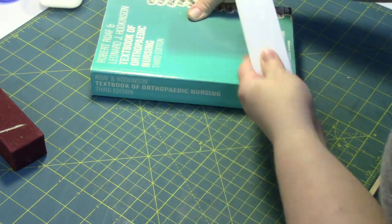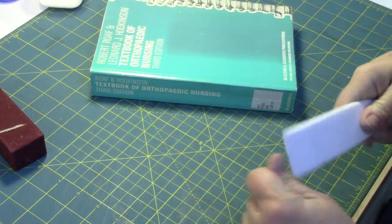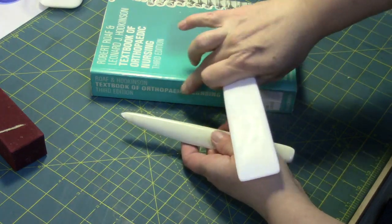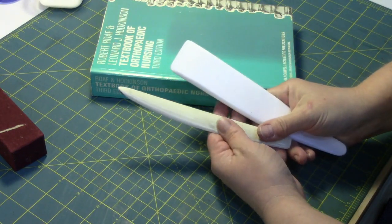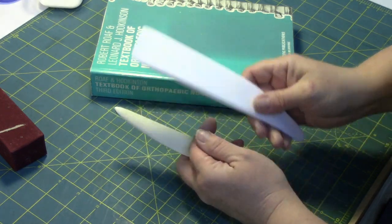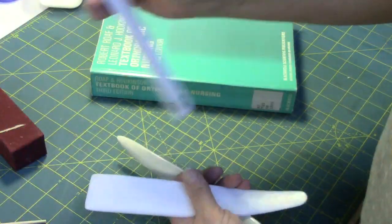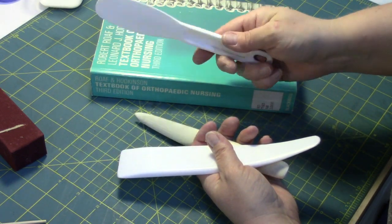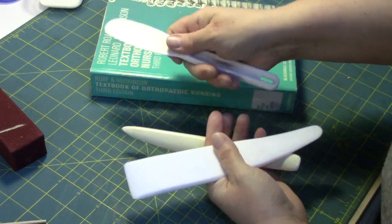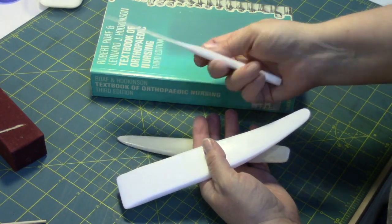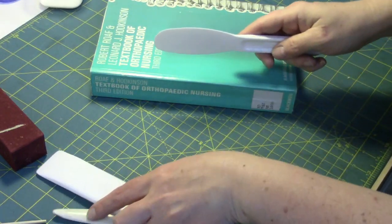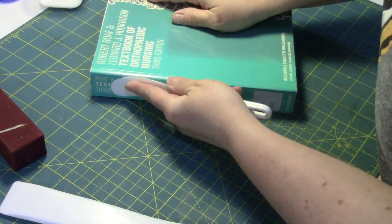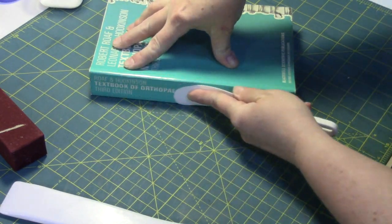You can even use a Teflon folder or a bone folder, there are different kinds of tools that are great to kind of burnish different surfaces in book binding. Some are actually made from bone, some are made from Teflon. You can also even use this, you've probably seen one of these, it's like an icing spreader for cakes, or a spatula. You can get those at a kitchen supply store for about a dollar, and they work the same way. Basically what you're doing with it is use your finger on the back of it, and it will slide along the surface, and you're just getting extra pressure.